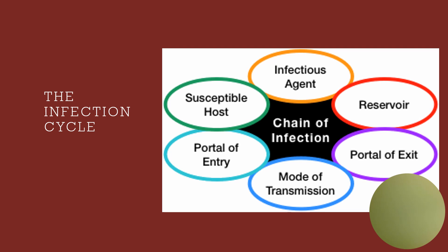Then we have to have a way for that organism to get from one host to a potential host. This is going to be through direct contact, indirect contact which will include a vector — a vector would be like a mosquito — the airborne route, or droplet. Then we have to have a portal of entry for that infectious organism to get into the new potential host, and the host has to be susceptible. That organism also has to be able to overcome the resistance mounted by that host's immune system.